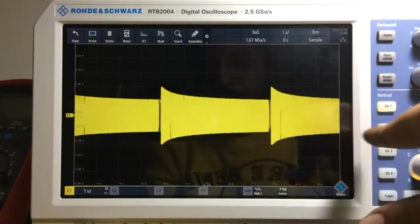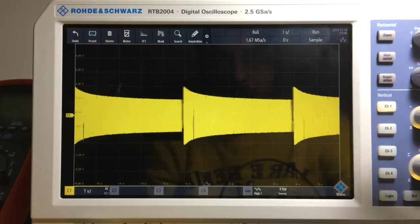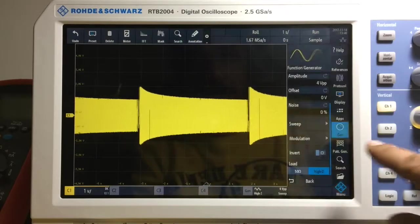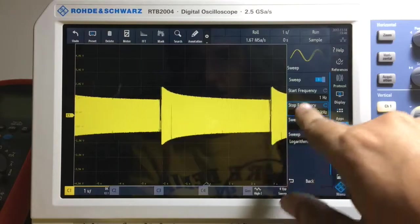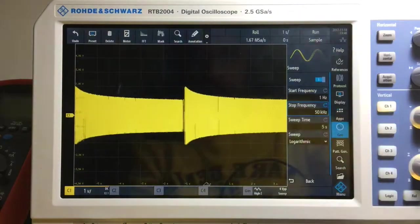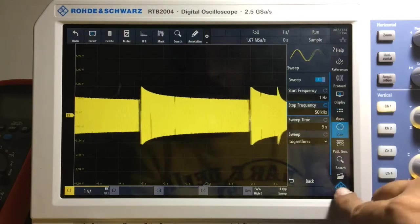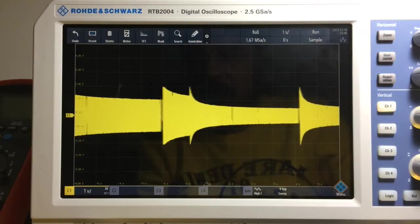It does have that Bode plot kind of shape. If I change the sweep from 20 kilohertz to something like 50 kilohertz, now it begins to look a lot more like the traditional Bode plot that you're expecting.